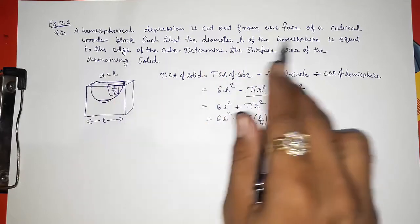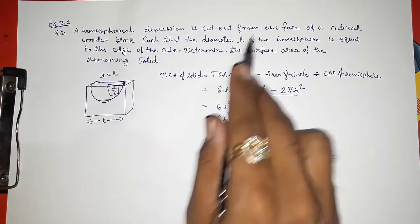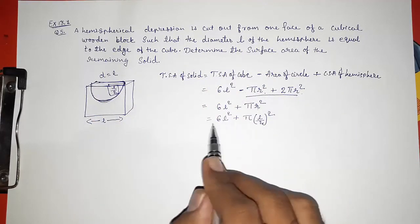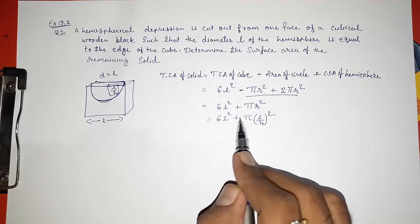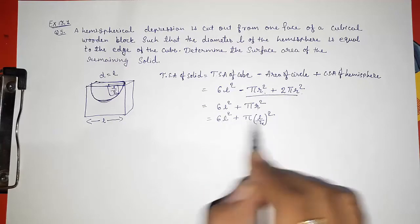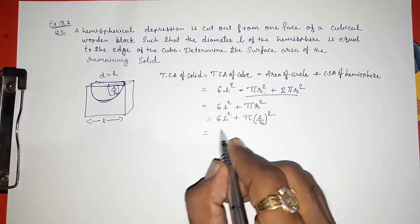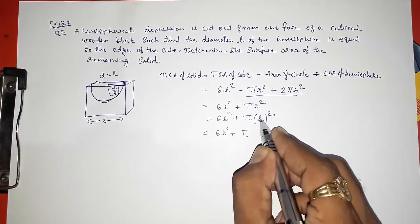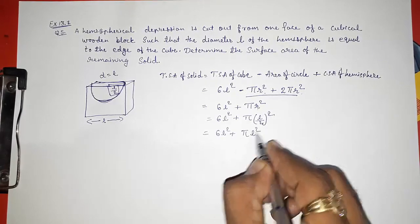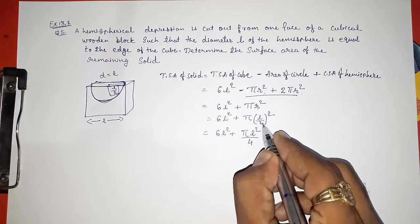They had not given us actual values, so we are going to keep this π as π only and instead of r we are going to take L only, so our answer will be also in π and L only. Now 6L² plus π and this L² by 4, because 2 square will be 4.